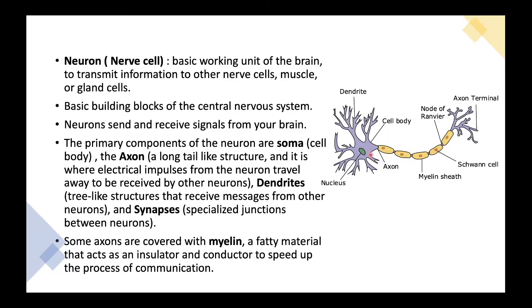What are dendrites? These are tree-like branches. They are basically our signal-receiving ends. And what are synapses? These are junctions through which two neurons communicate.